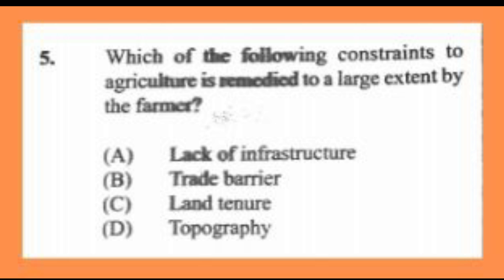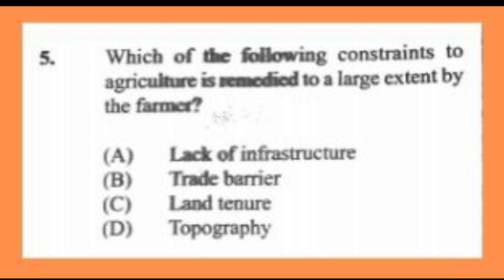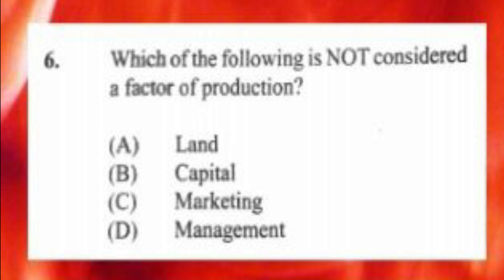Question number five: which of the following constraints to agriculture is remedied to a large extent by the farmer? A) lack of infrastructure, B) trade barrier, C) land tenure, D) topography. The answer is C, land tenure. Land tenure really means the ownership of land by farmers. Out of this category, land ownership is controlled by the farmer.